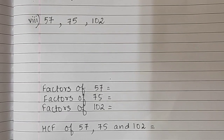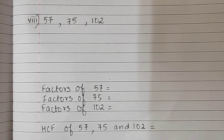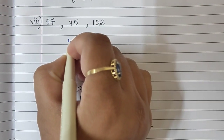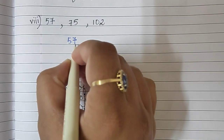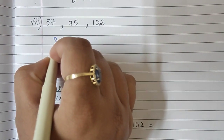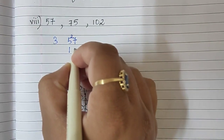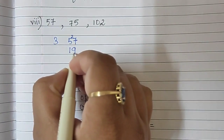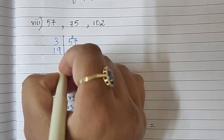Sum number 8 — that is 57, 75, and 102. We will find the factors of these numbers. 57 is divisible by 3, so we begin with 3. 3 nineteens are 57. And 19 is a prime number, so we write 19 ones are 19.